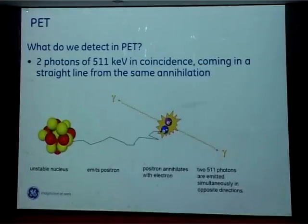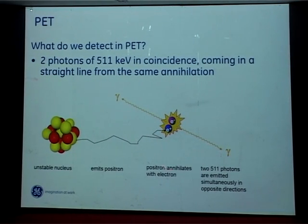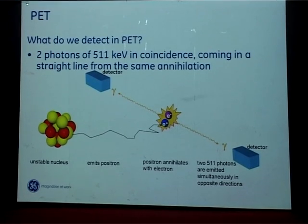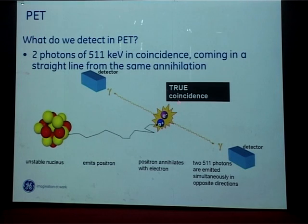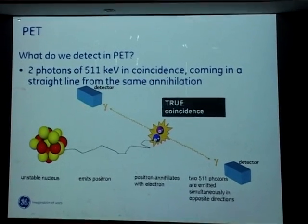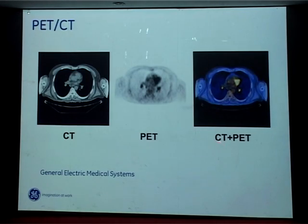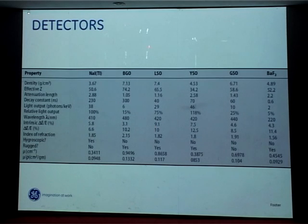In PET, we detect two photons of 511 keV in coincidence, coming in a straight line from the same annihilation event. An unstable nucleus emits a positron, which annihilates with an electron producing two 511-keV gamma rays emitted simultaneously. These are detected by the detector within a timing window — the system accepts only photons within a particular timing window, called true events. You then have a CT image, a PET image, and the fused PET-CT image.